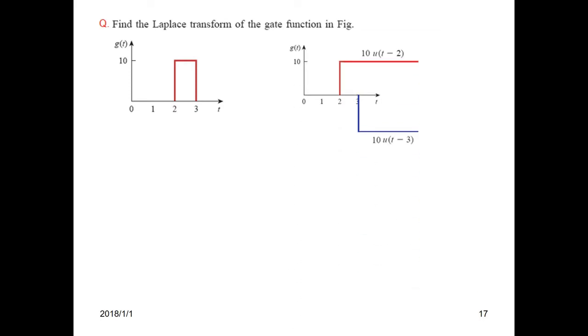We can represent this gate function by two unit functions: one with amplitude 10u(t-2). This t-2 means it is shifted by two seconds, so after two seconds it is starting.